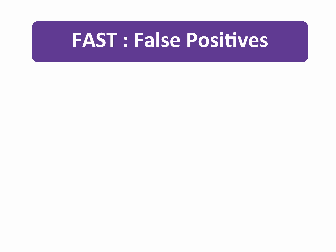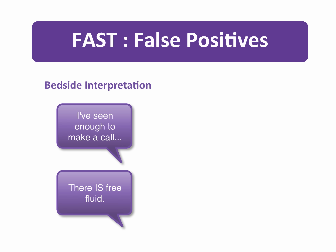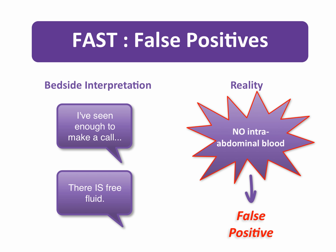Let's now turn our attention to sources of false positives in the FAST exam. In the setting of trauma, a false positive occurs when your interpretation is positive for free fluid — and therefore presumed hemoperitoneum — when in fact there is no blood in the peritoneal cavity. In general, this error is relatively safe in that it will presumably lead to consultation or further investigation rather than potentially missing an injury. However, in rare cases, a false positive in an unstable patient may lead to a laparotomy searching for an abdominal bleed when the source of instability is something else, leading to a negative laparotomy and delay to appropriate treatment. As such, it is important to familiarize yourself with sources of false positive studies.